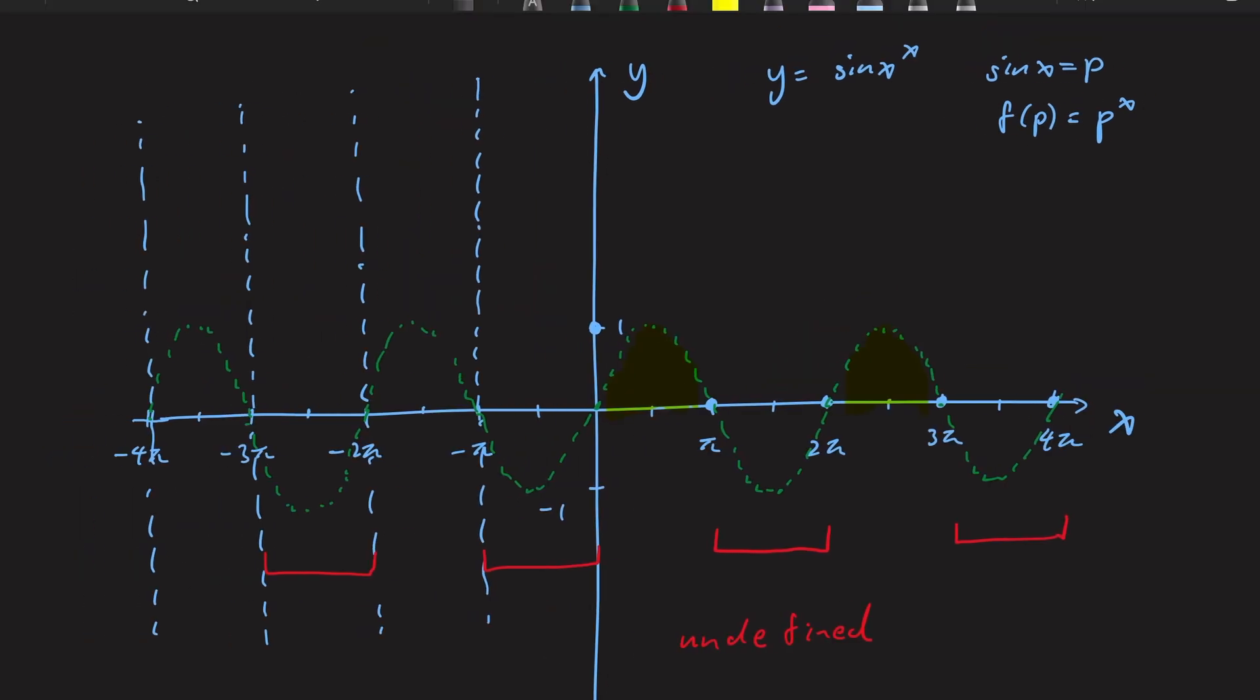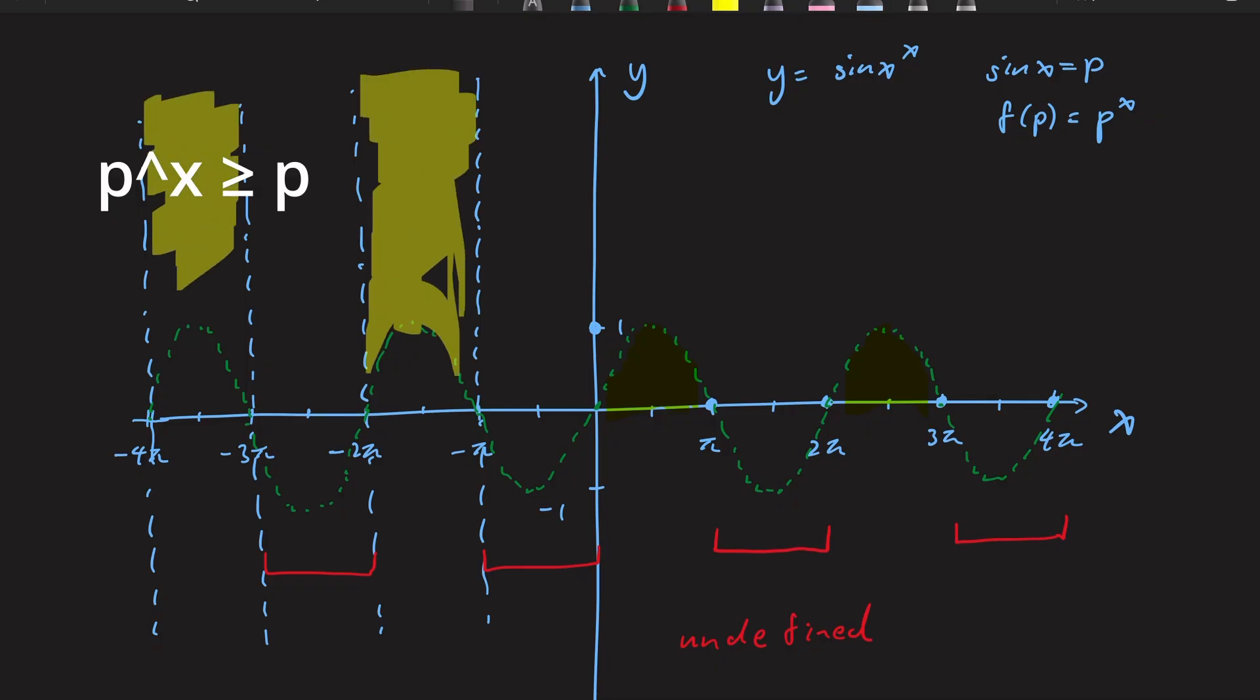For negative x, p to the power of x is larger or equal to p. It is easier to see if you consider p to the power of x equals this, where the base is larger than 1 and the power is positive. Again, equality holds when p equals 1. Therefore, the graph must be in these regions.